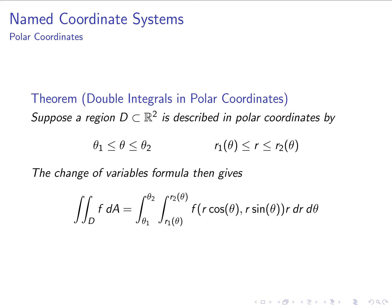Let's state the change of coordinates theorem in polar coordinates. Suppose we are studying a region D in two dimensions, described in polar coordinates by inequalities: θ ranges from θ₁ to θ₂, and r ranges from r₁(θ) to r₂(θ). Then any double integral of a function f over D can be translated using the polar change of coordinates: r ranges from r₁(θ) to r₂(θ), θ ranges from θ₁ to θ₂, and we replace all x's with r cosθ and all y's with r sinθ.